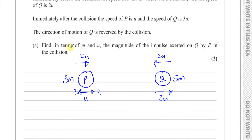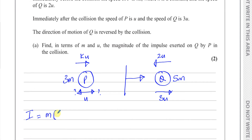For part A, we need to find in terms of m and u the magnitude of the impulse exerted on Q by P. The impulse causes a change in the motion of Q. The formula for impulse is the mass of the object times the change in its velocity: mv minus mu, which is the change in momentum. Impulse equals mass times final velocity minus mass times initial velocity.